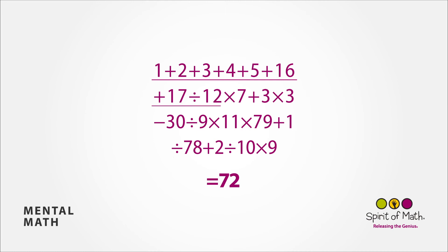Dividing that by 12 is 4, multiply it by 7 is 28, and adding 3 is 31. Multiply that by 3 gives you 93. Subtract 30 is 63, divided by 9 is 7. Multiply that by 11 is 77.